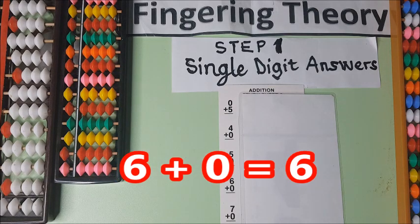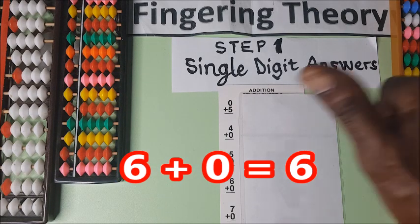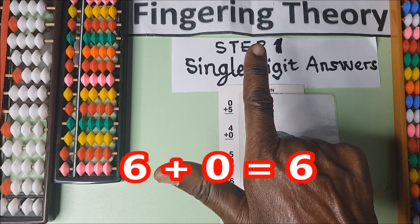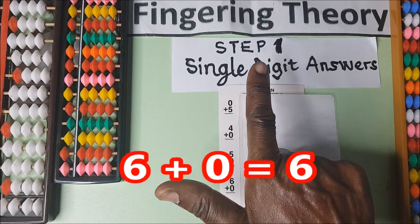Now we have six plus zero. We have five plus one is six. Six plus zero is the same six.